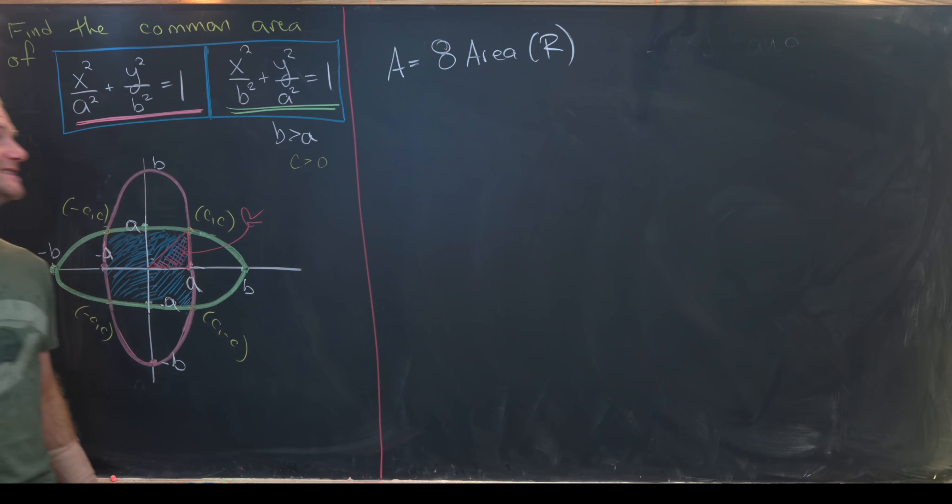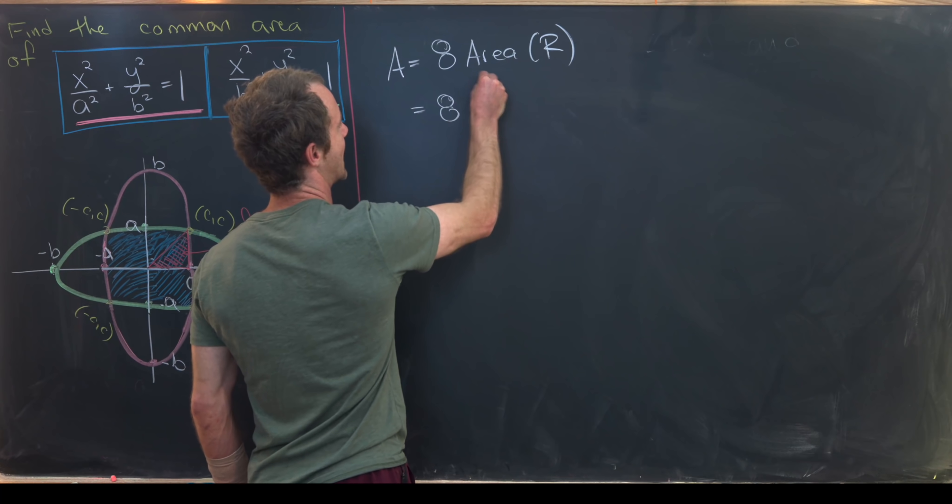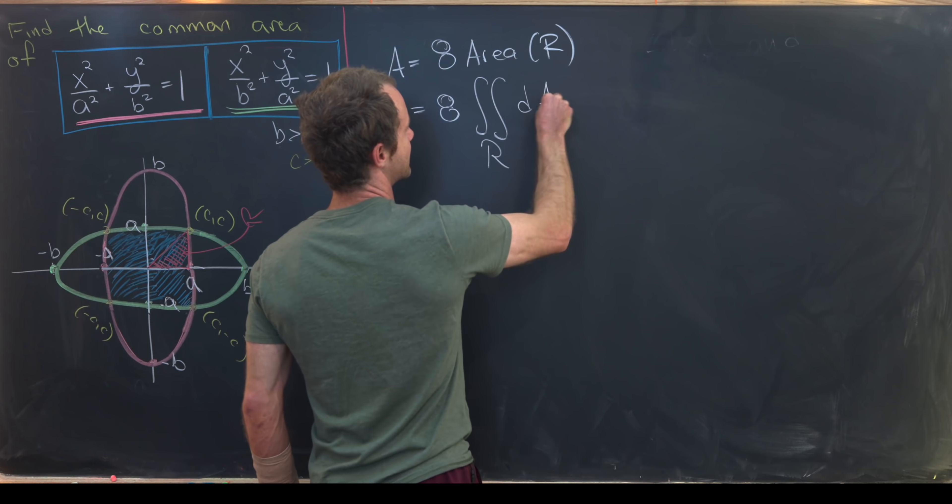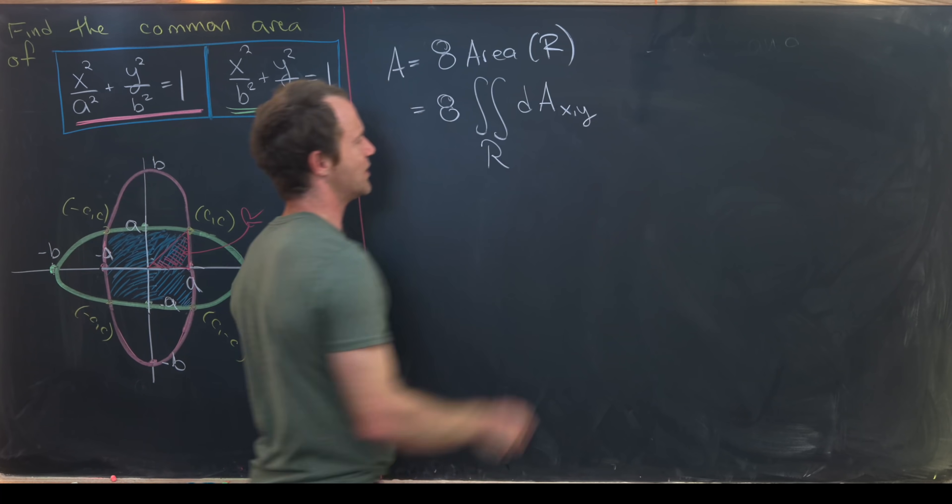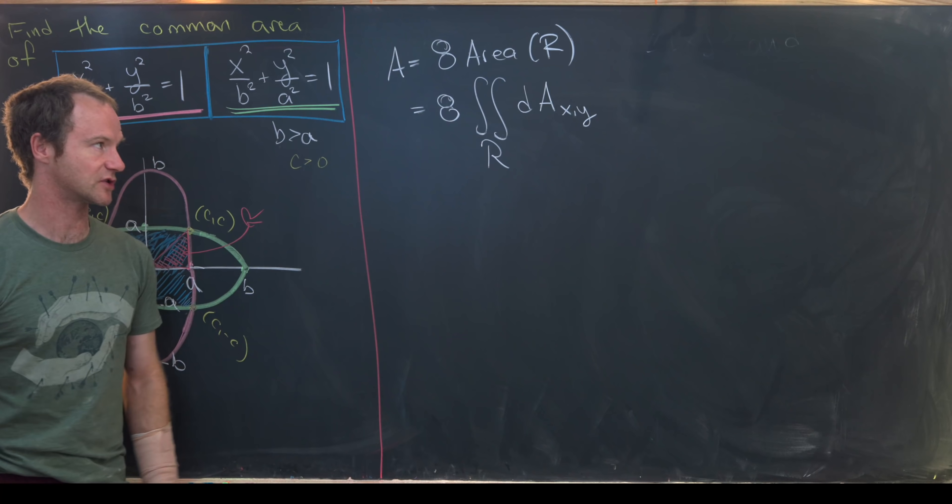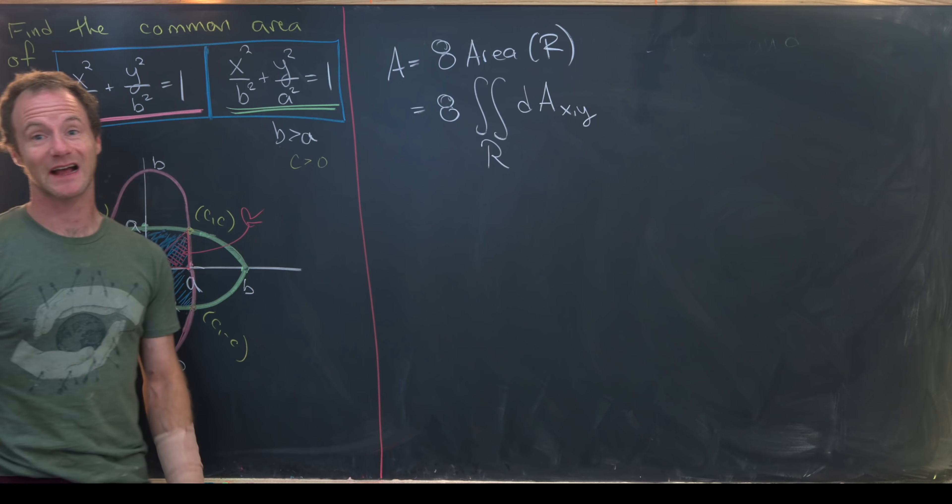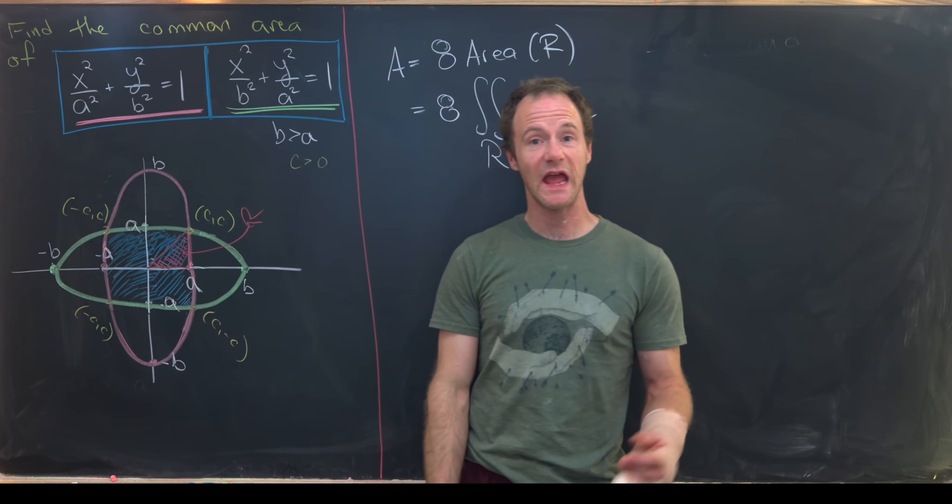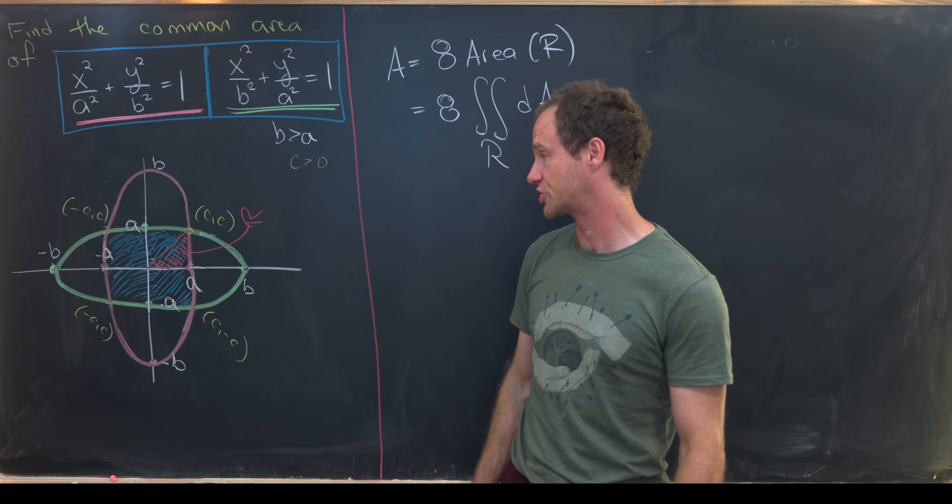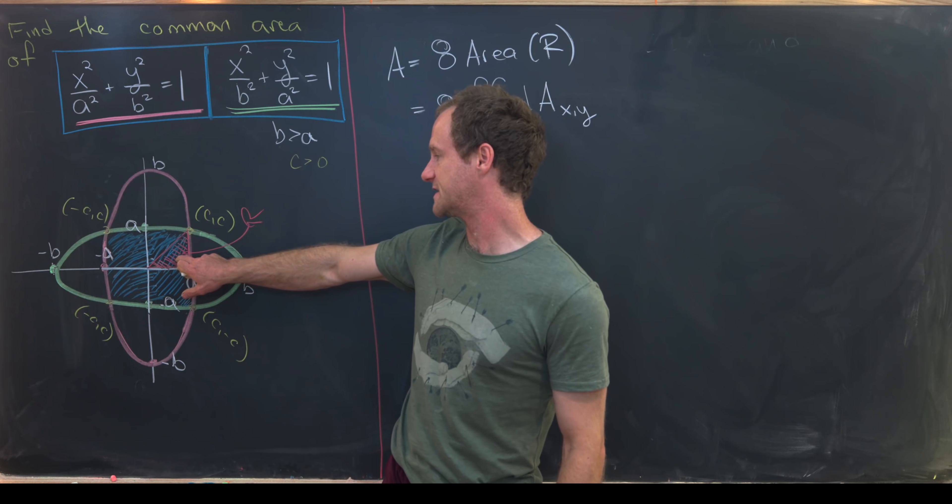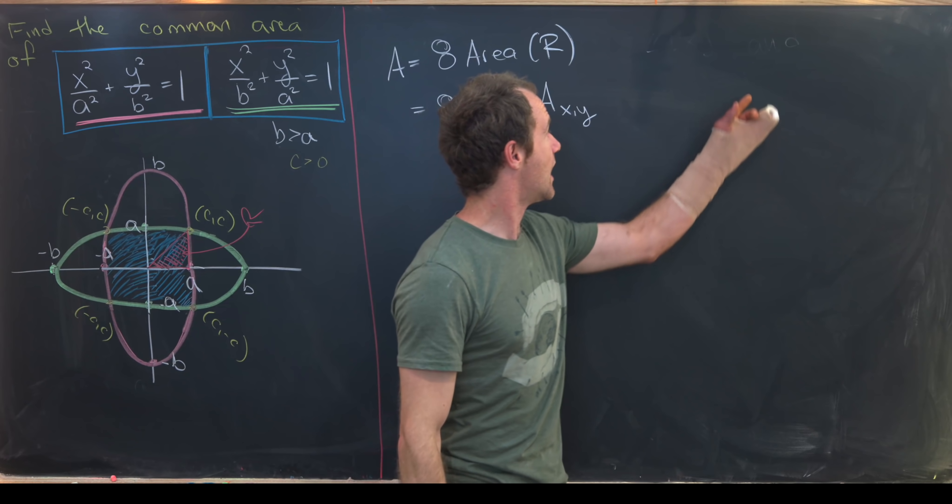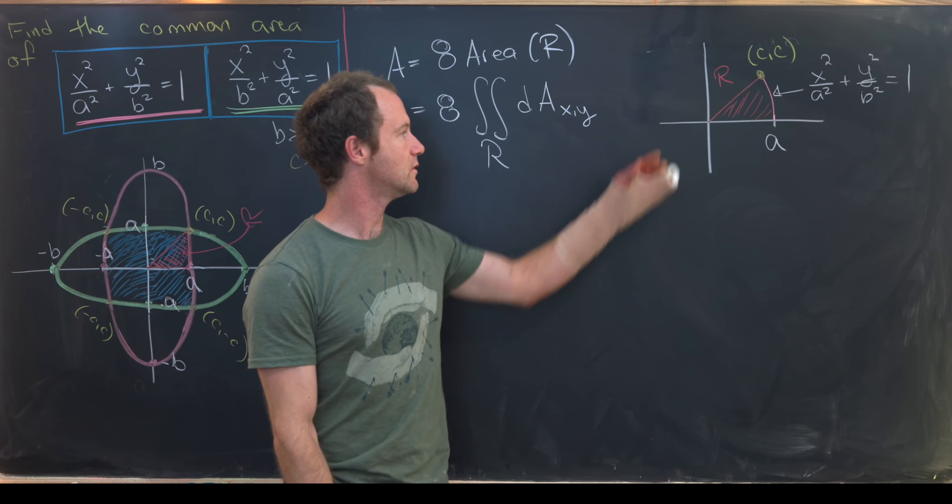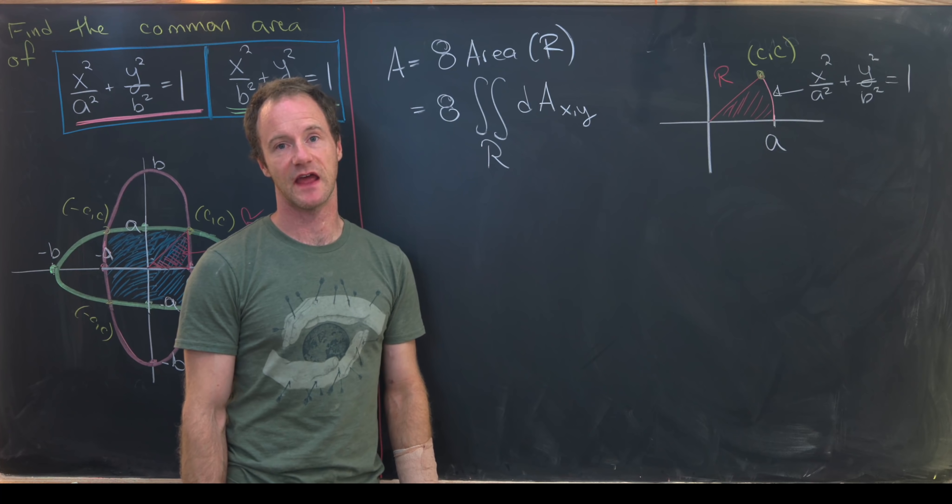We can set up a double integral for that area—that's equal to eight times the double integral over r of the differential area component. I'll put x comma y here to show that this is the differential area component in the x y plane. Next we want to do a change of variables. In order to get an idea of how this change of variables should go, let's expand this picture of just r so that we can get a better idea of what's going on.